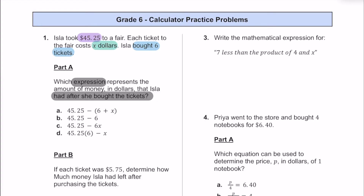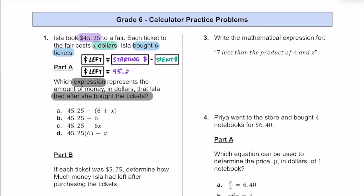Let's set up a verbal model. If we want to find out how much money Isla has left, we take the starting amount and subtract the money she spent. She's starting with $45.25, and she's buying six tickets that all cost X dollars — so six times X. Based on that, we go with answer choice C: $45.25 minus 6X, subtracting six times whatever the cost of one ticket is.